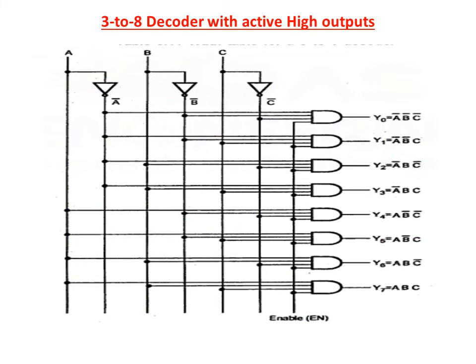This is the logic diagram for the 3-to-8 decoder with active high outputs, implemented with AND gates. The 3 inputs A, B, C with enable inputs are connected, and with inverters we get A-bar, B-bar, C-bar. All the minterms are implemented with AND gates. So Y0 = A-bar B-bar C-bar, Y1 = A-bar B-bar C. Similarly we can write the equations for all 8 outputs, with Y7 = A B C. This way we can draw the logic diagram for the 3-to-8 decoder.